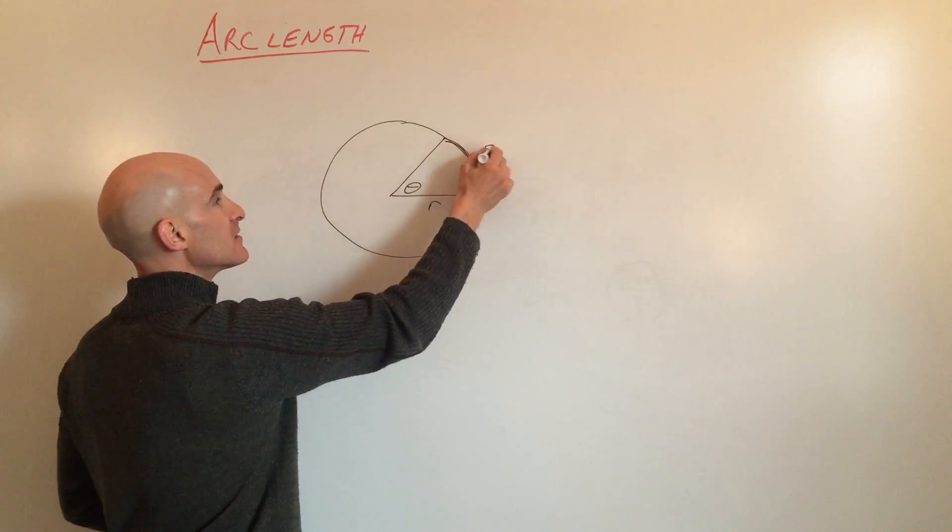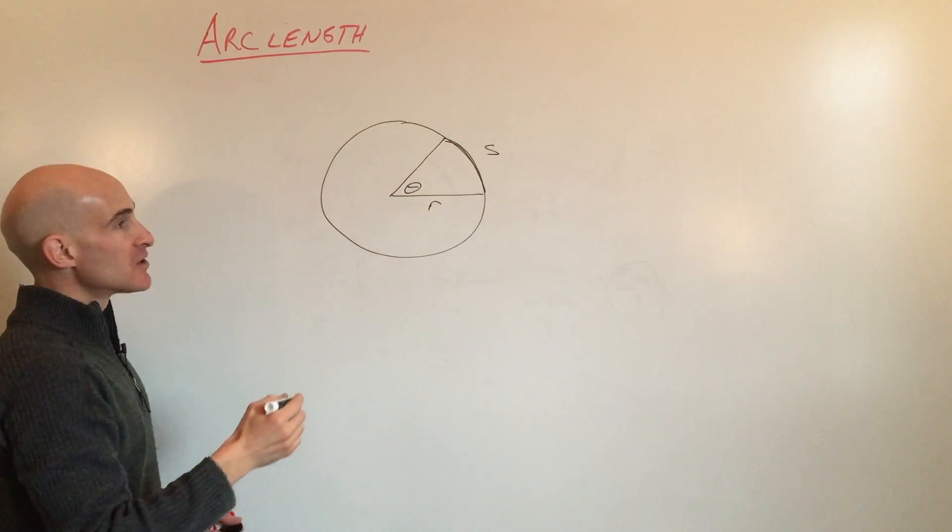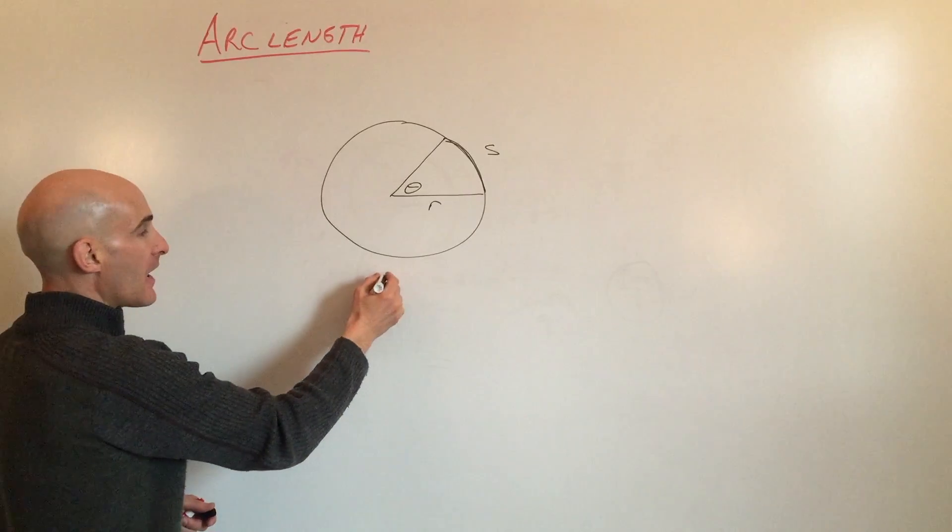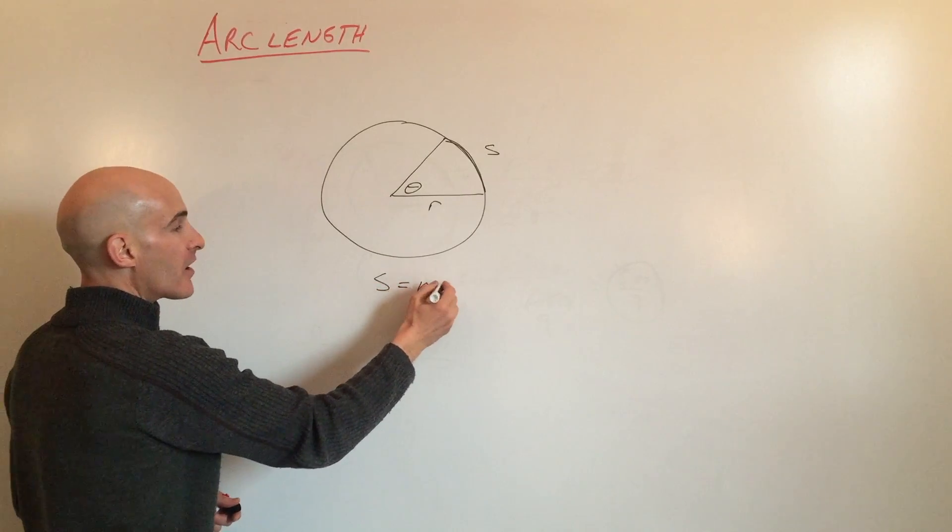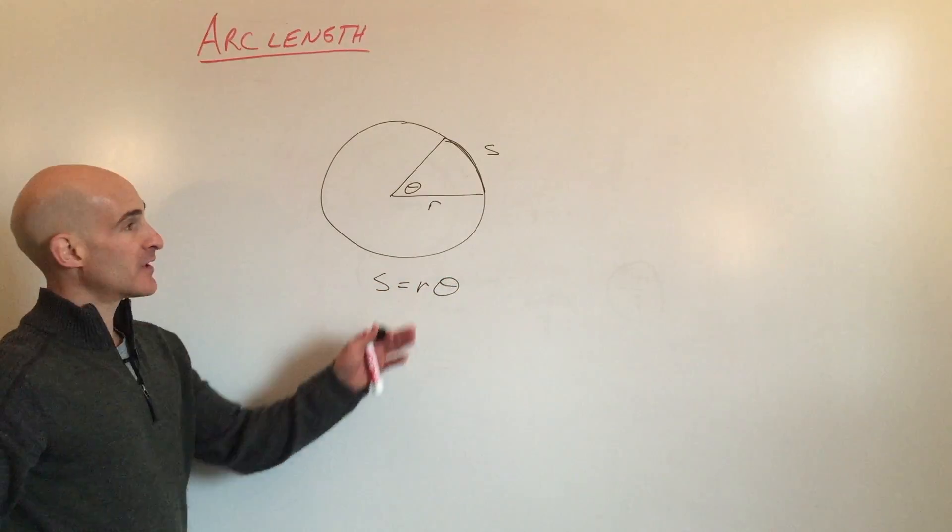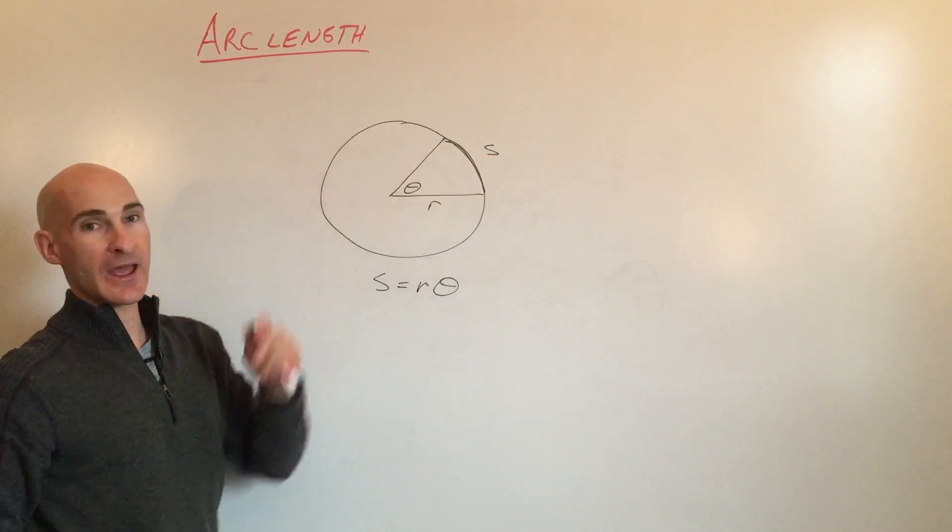Arc length here is referred to as S. So we have a formula S equals R theta that relates the radius, the central angle, and the arc.